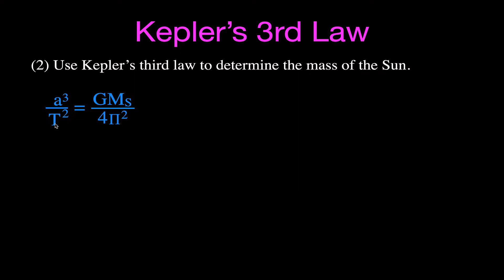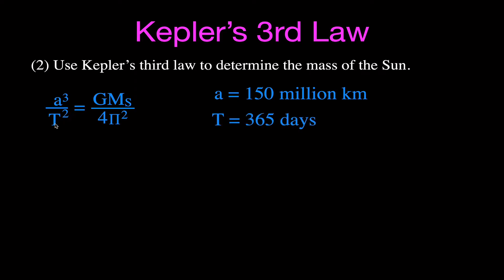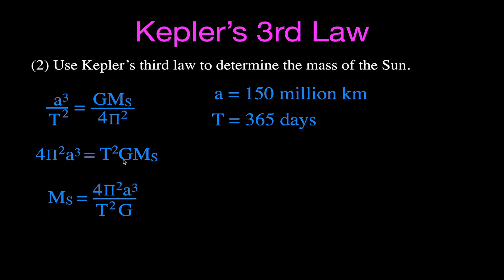Earth has a semi-major axis of 150 million kilometers and a period of 365 days. We cross-multiply to get 4π² times A cubed equals T squared times G times M_sun. Dividing both sides by T squared times G gives the mass of the Sun equals 4π² times A cubed divided by T squared times G.